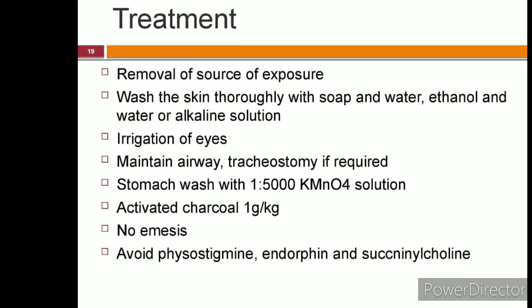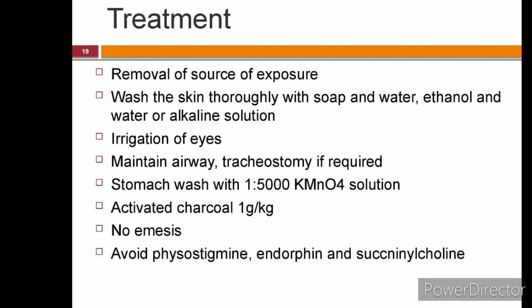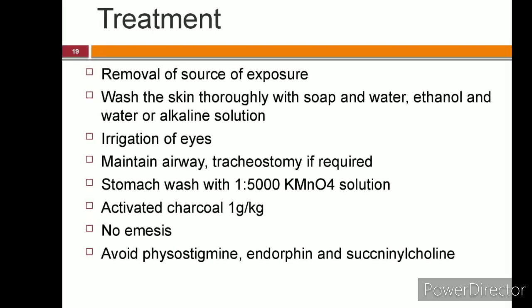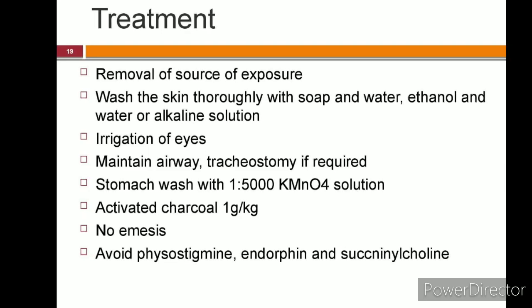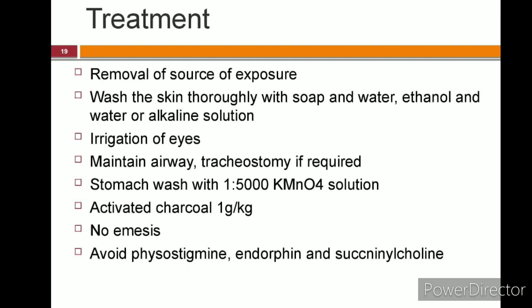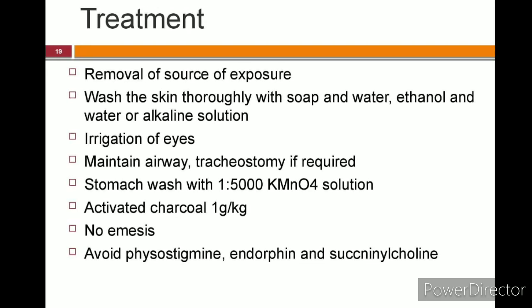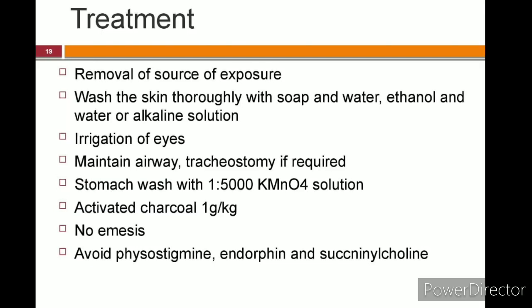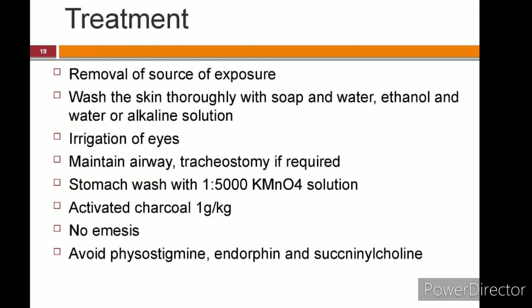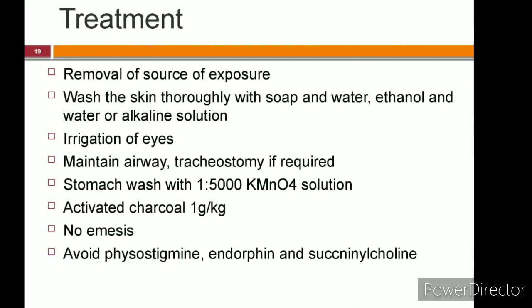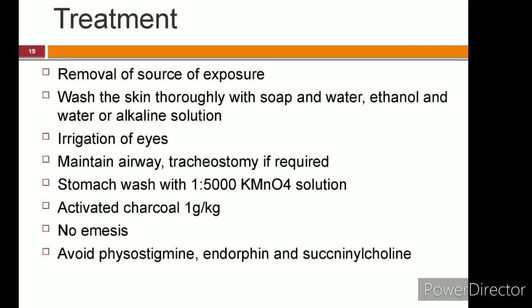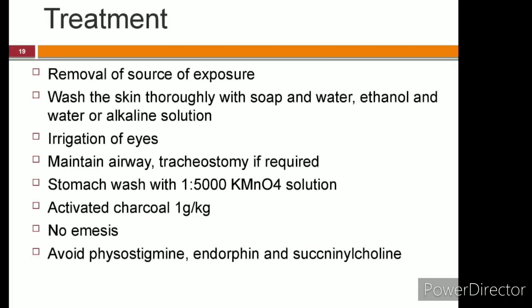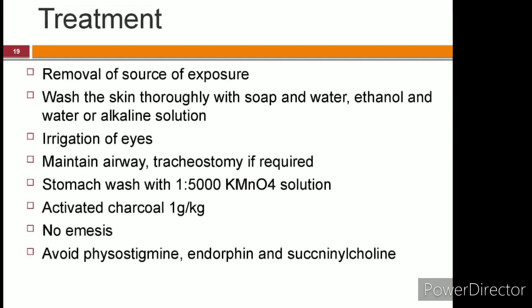Now for treatment of organophosphorus poisoning. First, remove the patient from the source of exposure. Wash the skin thoroughly with soap and water, followed by ethanol and water or alkaline solution. If the eye is contaminated, irrigate for 15–20 minutes. Maintain the airway — in case of difficulty, tracheostomy may be performed. Perform stomach wash with 1:5000 potassium permanganate solution. Activated charcoal can be given at 1 gram per kg body weight. Be careful: do not induce vomiting, and avoid physostigmine, morphine, and succinylcholine.